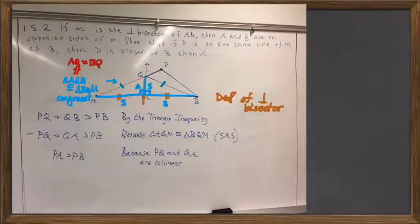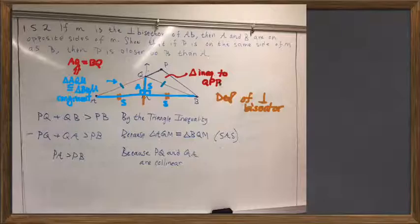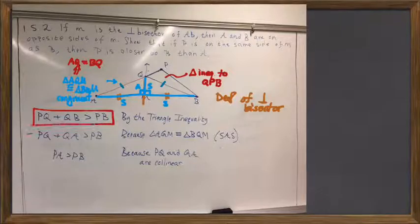But then, because that was an isosceles triangle, we then applied the triangle inequality to the triangle QPB. And that's where this statement here came from. It showed us that PB had to be shorter than the sum of PQ and QB.